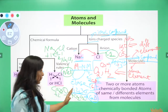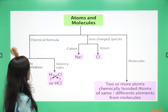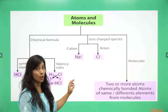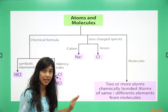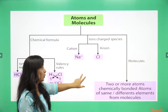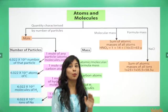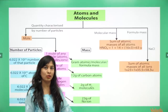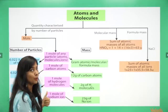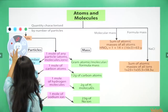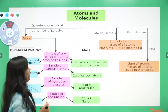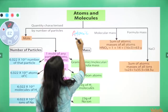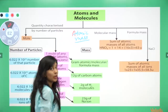I have made previous videos on atoms and molecules - please go through them, all the concepts will be more clear. Now let's understand some important terms: atomic mass, molecular mass, and formula mass. When talking about any element made up of atoms, every atom has some mass. We represent the mass of one atom as atomic mass, mass of one molecule as molecular mass, and mass of one ionic compound unit as formula mass.